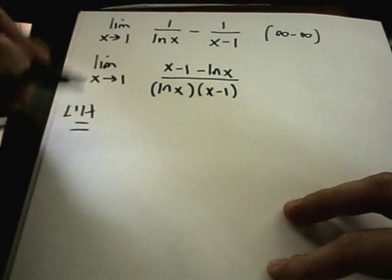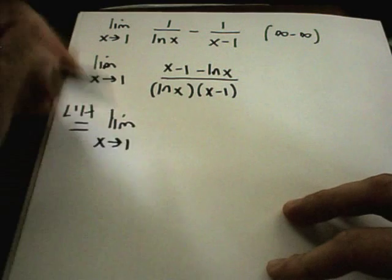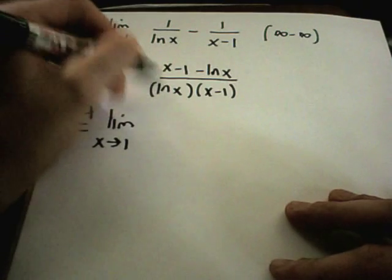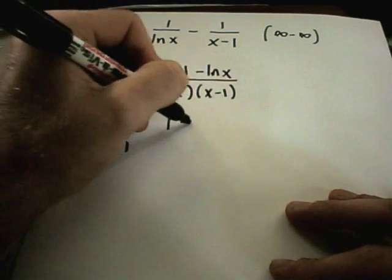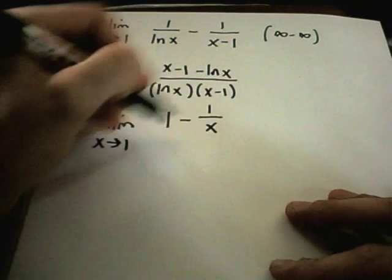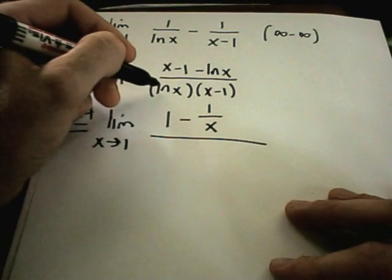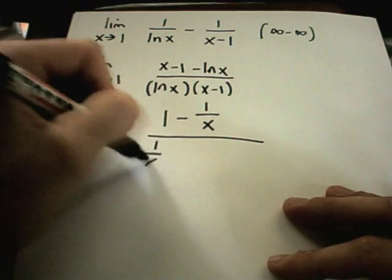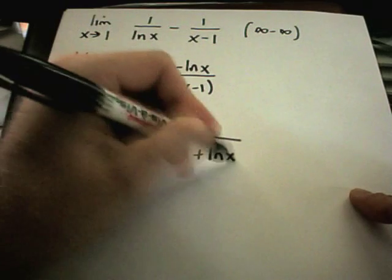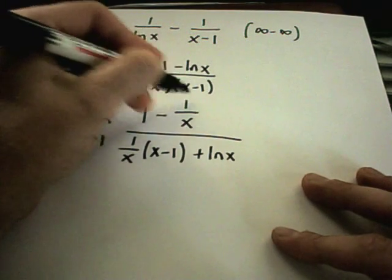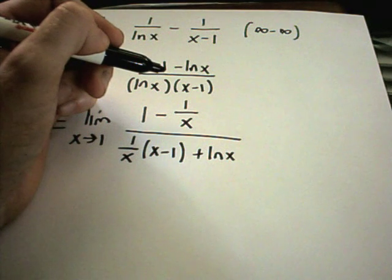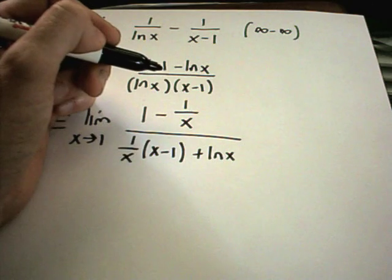I'm going to use L'Hôpital's rule. If you plug in 1 you get 0 over 0, confirming we can apply it. The derivative of the top: the derivative of x is 1, the negative 1 becomes 0, then minus the derivative of ln(x) which is 1 over x. On the bottom, using the product rule: the derivative of ln(x) is 1 over x times (x minus 1), plus ln(x) times 1. Now I want to clean this up a bit.